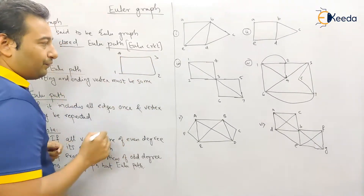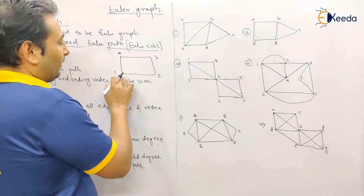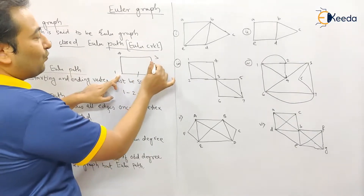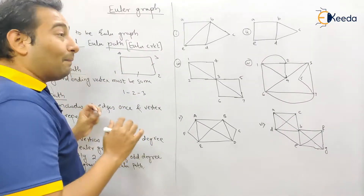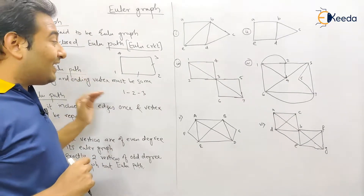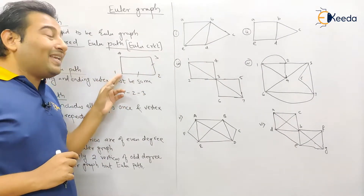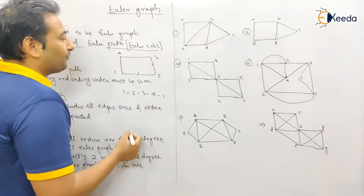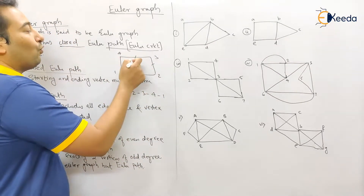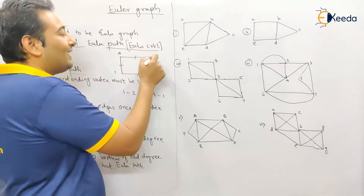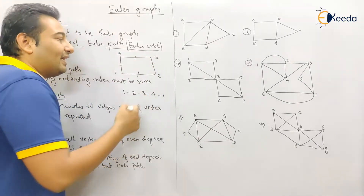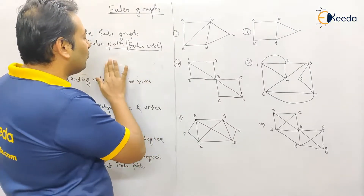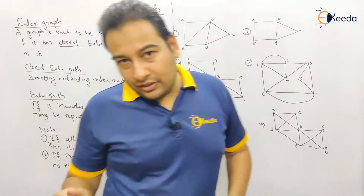For example, in a graph with vertices 1, 2, 3, 4 — the path 1→2→3 is a walk: edges visited once, no restriction on vertices. But it's not an Euler path, because in an Euler path every edge must be visited. If we extend it to 1→2→2→3→2→4→1, now all edges are visited once — that is an Euler path.